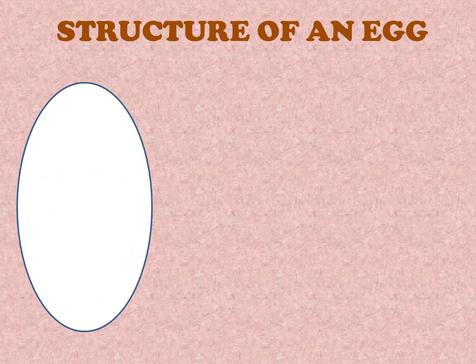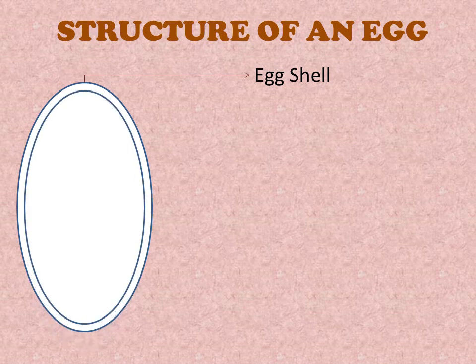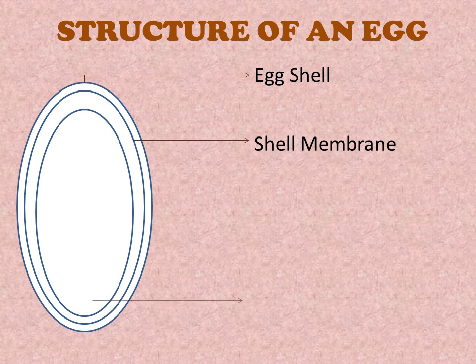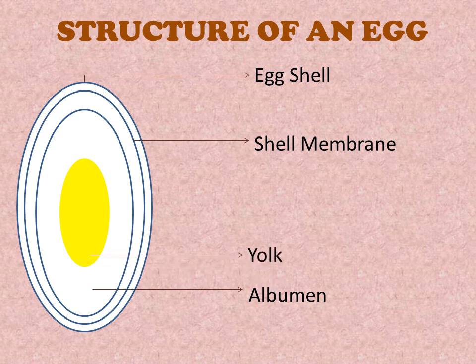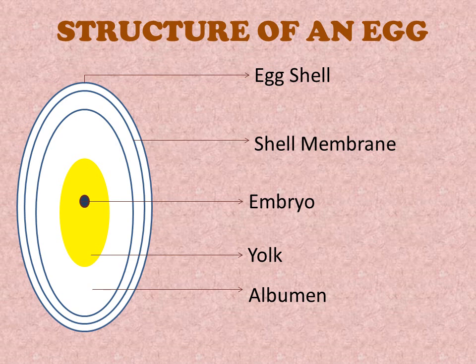Structure of an egg. Students, you have all seen an egg. It is covered with a white shell, which is hard and called the egg shell. Now we will discuss the internal structure of the egg. Inside the egg shell, we have a second layer called the shell membrane. Inside the shell membrane, we have a white liquid called albumin. Inside the albumin, we have a yellow-colored liquid called the yolk, and in the yolk the developing baby, that is the embryo, is present. These are the basic structures of the egg.